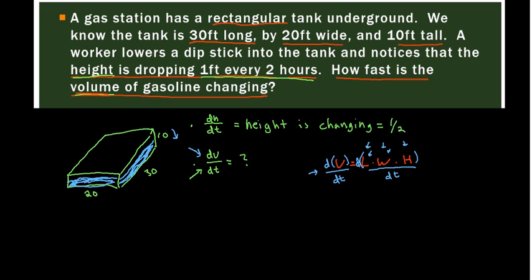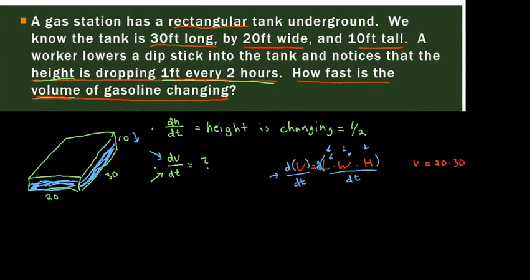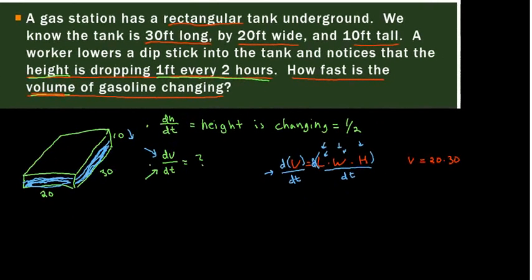So the equation we actually have is volume equals 20 times 30 times h. Or we have 600h. And that's what we're going to take the derivative of.